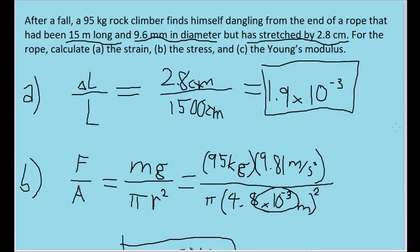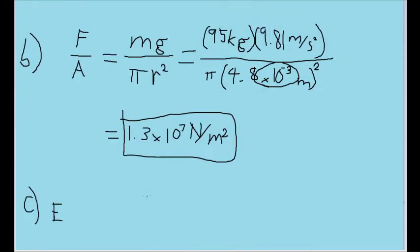Finally, part C asks us for the Young's modulus, which is usually written as E. An elastic modulus is defined to be the constant proportionality between stress and strain, so we can find the modulus here by taking our value for the stress and dividing it by the value for the strain.